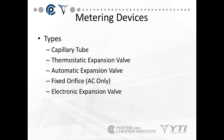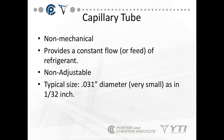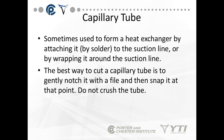We have several types of metering devices: the capillary tube, the thermostatic expansion valve (TXV), the automatic expansion valve, a fixed orifice seen in air conditioning and heat pumps only, and an electronic expansion valve. The capillary tube is one of the few that's non-mechanical. It provides a constant flow of refrigerant, is non-adjustable, and its typical size is 0.031 inches in diameter — extremely small, about 1/32nd of an inch. It's sometimes used to form a heat exchanger by attaching it by solder to the suction line or by wrapping it around the suction line.